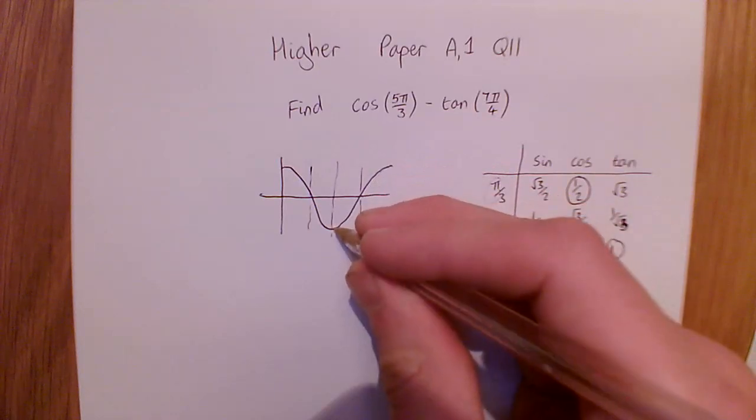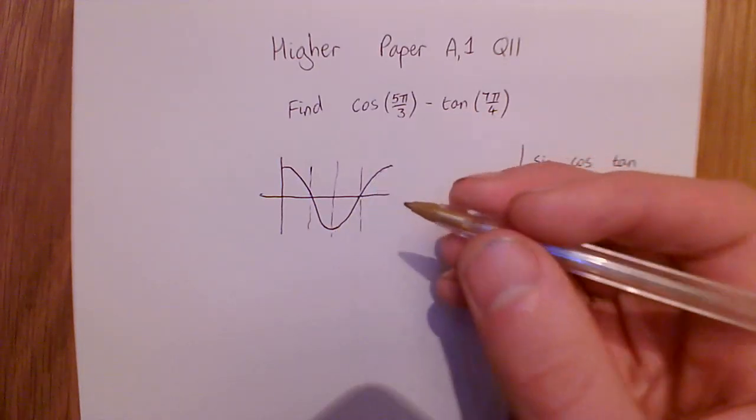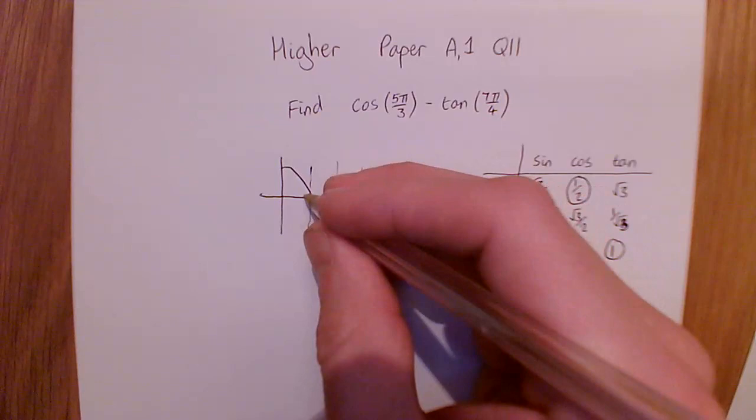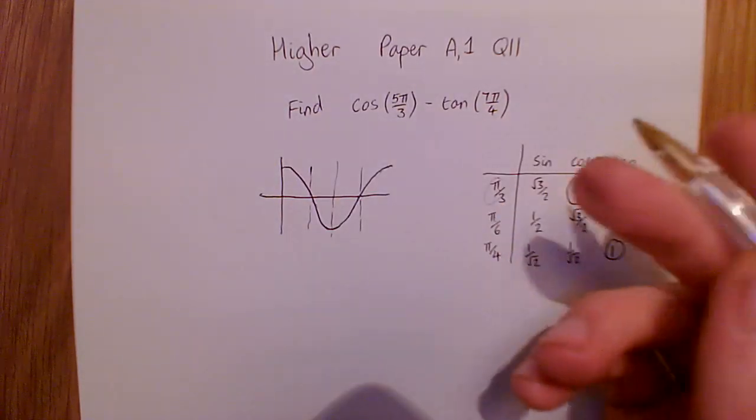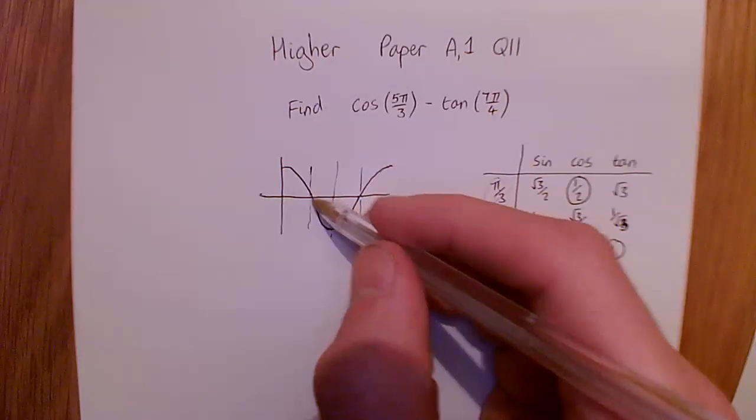What's happening in all 4 of those parts? Well, this section here and this section here of the graph are identical. This section here is also identical, and this section is identical. So the cos graph is basically 4 repeating sections that are either positive or negative.